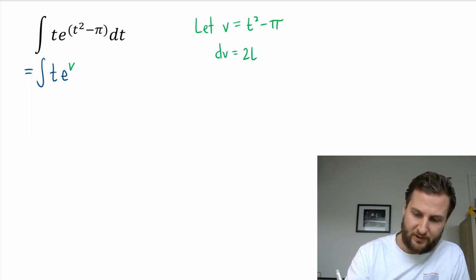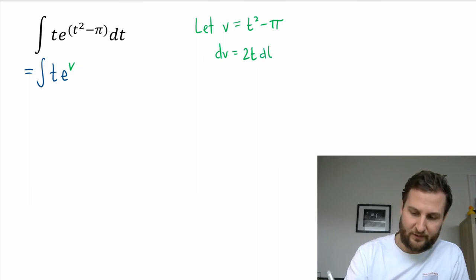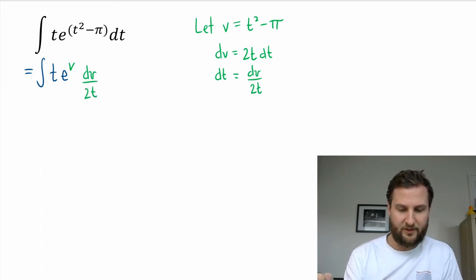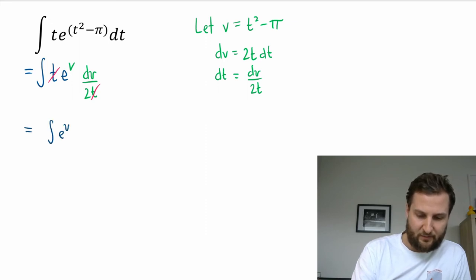I still need to replace dt, so dv equals 2t dt. Solving for dt by itself, I get dv over 2t. Looking at this, that's good news; I need that t to disappear, and my integral now is just e to the power of v dv.